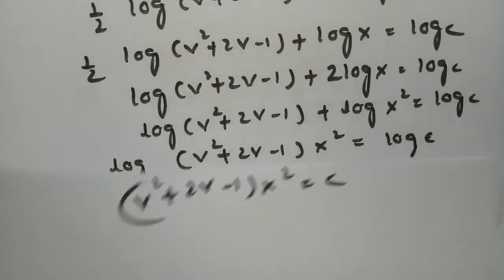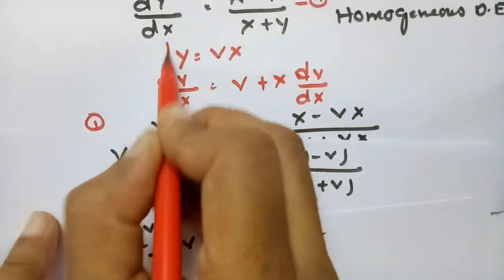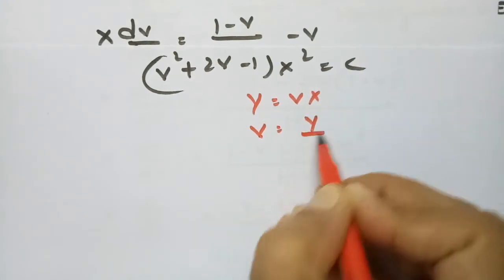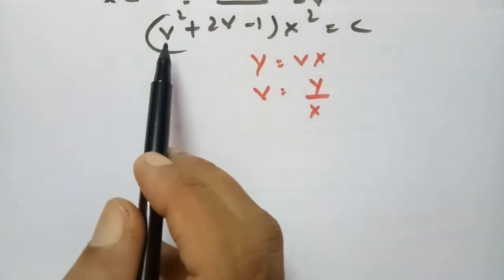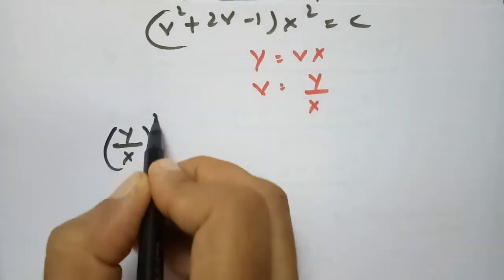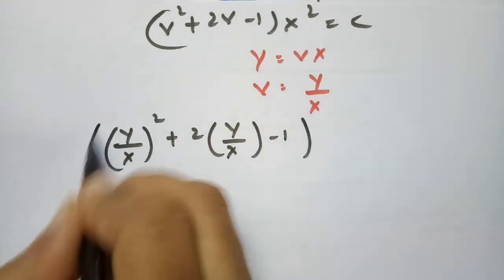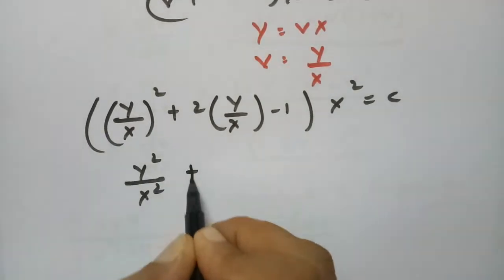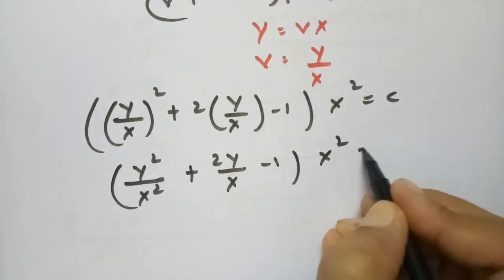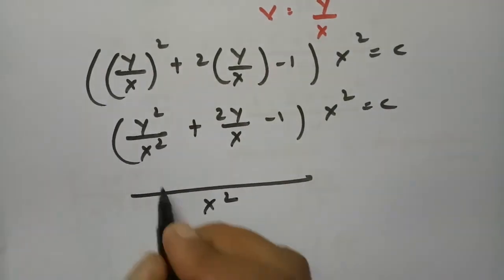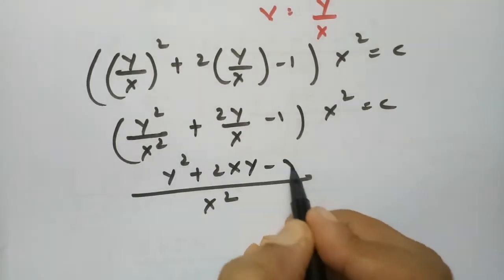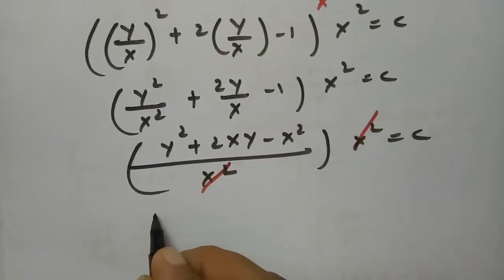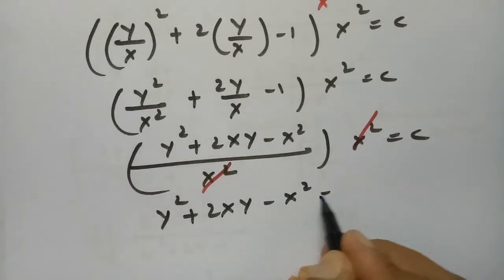Back-substituting v = Y/X: (Y/X)²·X² + 2·(Y/X)·X² - X² = C. Simplifying: Y² + 2XY - X² = C. So the solution in capital letters is Y² + 2XY - X² = C.